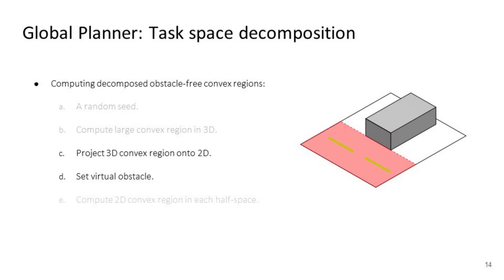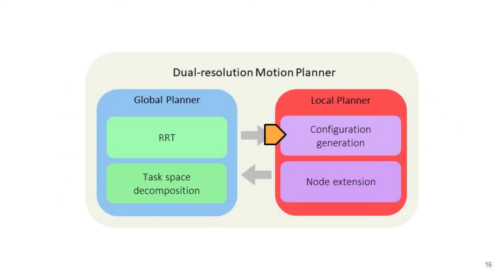Next, we project the 3D convex region onto 2D and set virtual obstacles. Lastly, we compute a 2D convex task space region in half-space for each mobile base.